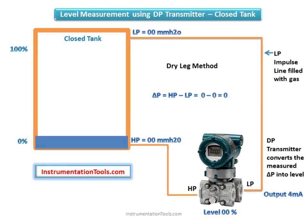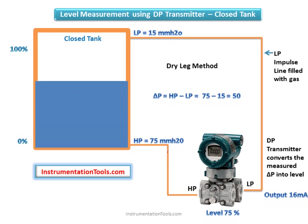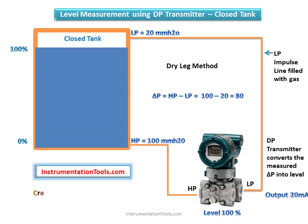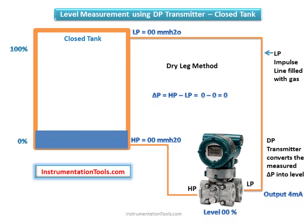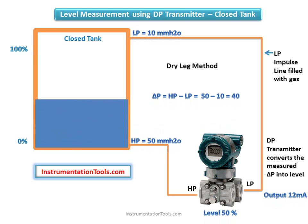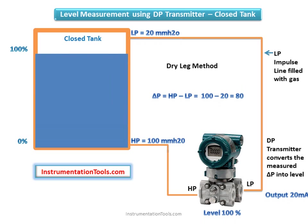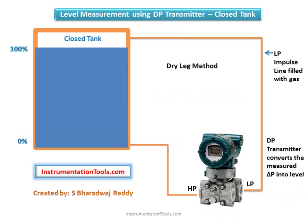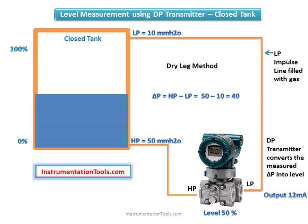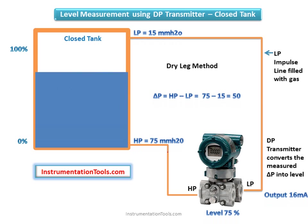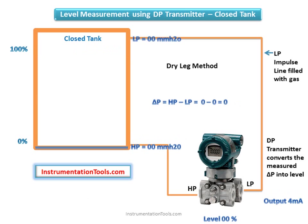In cases where tanks are not open to the atmosphere — that is, in pressurized or closed tanks — both the high and low pressure ends of the DP transmitter must be connected. These tanks are fully sealed to prevent release of vapors or steam. As a result, the liquid inside becomes pressurized, and the low pressure impulse line is connected at the top of the tank where vapors or gases are present.